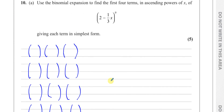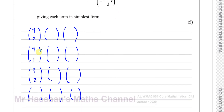Now we look at the main power, which is nine. We always start with nine C zero, then nine C one, nine C two, nine C three — the top number stays as nine, and the bottom number just increases. We could also go nine C nine, nine C eight, nine C seven, nine C six — it would still be the same, because Pascal's triangle is symmetrical.